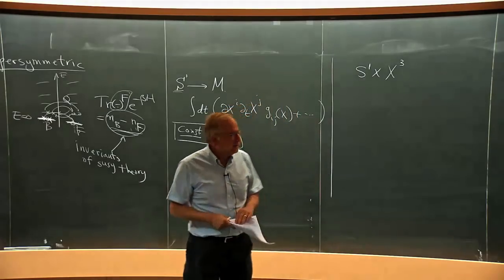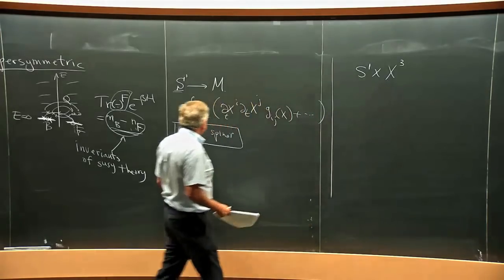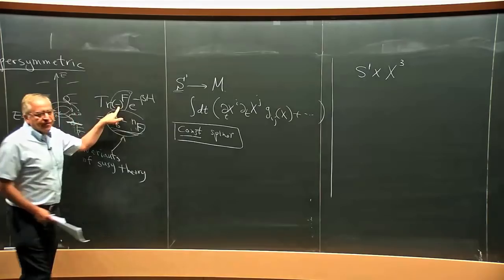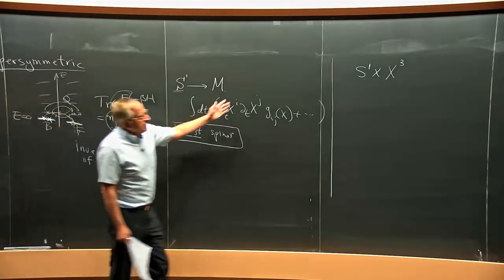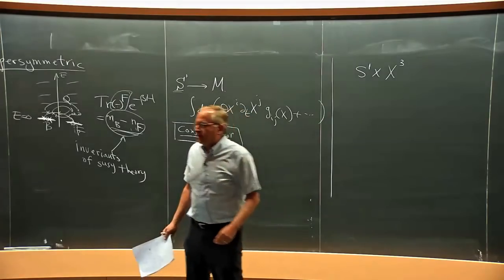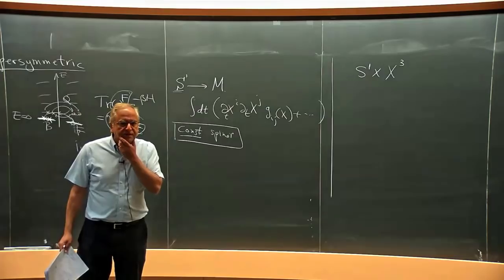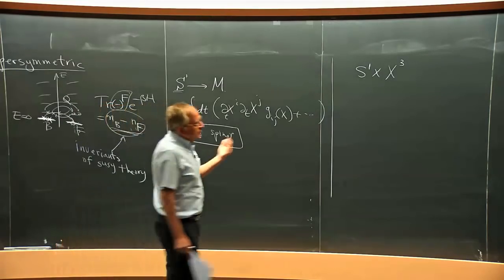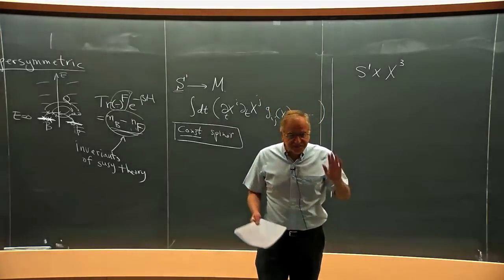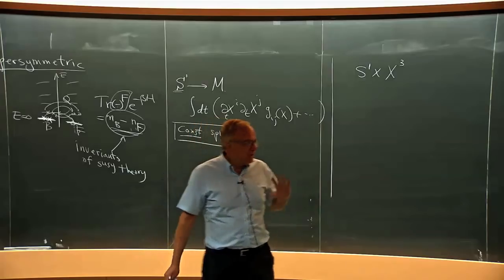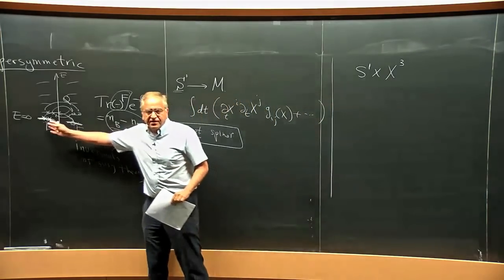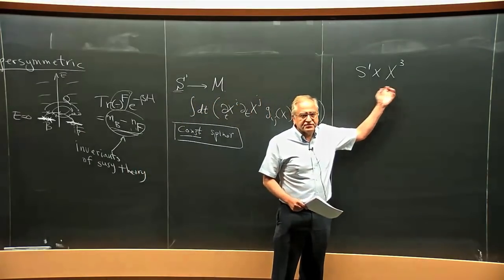It doesn't quite work. The reason is that on a general three-manifold, you don't have covariantly constant spinners. This is the analog of what would have happened if you had not put (-1)^F. For a general supersymmetric theory on a three-manifold, you're out of luck. The idea that supersymmetric theories are powerful hits a stumbling block. For three-dimensional tori — periodic boxes — you are fine. But for a mathematical interest, if you want to associate to three-manifolds some physical invariant, you need to make sense out of supersymmetry in this situation.